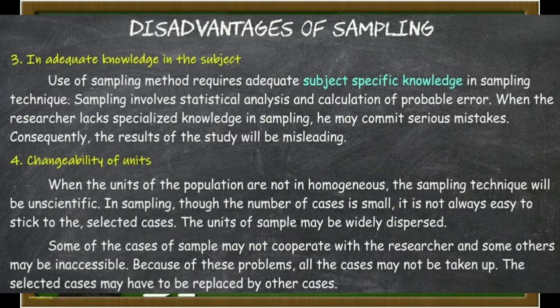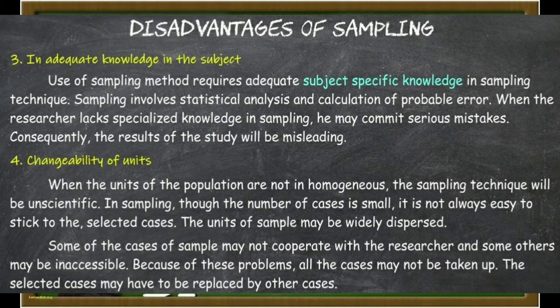The fourth disadvantage of sampling is changeability of units. When the units of the population are not homogeneous, the sampling technique will be unscientific. In sampling, though the number of cases is small, it is not always easy to stick to the selected cases. The units of sample may be widely dispersed. Some cases may not cooperate with the researcher, and some others may be inaccessible. Because of these problems, all cases may not be taken up, and the selected cases may have to be replaced by other cases. Changeability of units stands in the way of the results of the study.